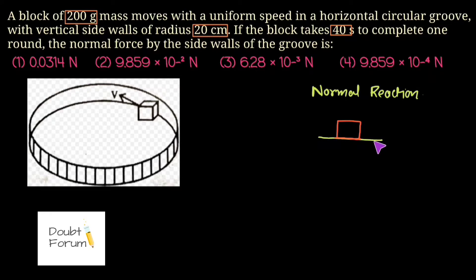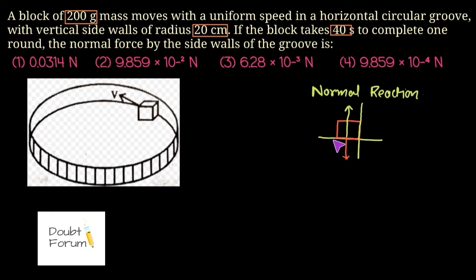So this surface creates a normal force on the block in the upward direction. The block also creates a normal force on the horizontal surface in the downward direction. These two are equal in magnitude but opposite in direction, and always perpendicular to the contact. Now suppose the block is in a corner — there are two contacts: one with the floor and one with the wall. The wall creates a normal force on the block horizontally, and whenever there is a contact, this normal reaction force comes into existence.